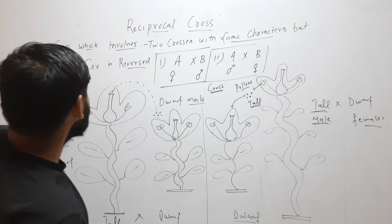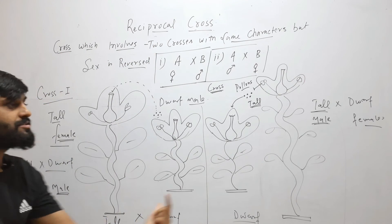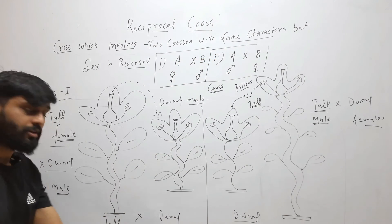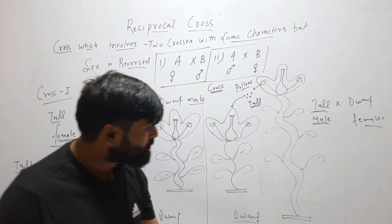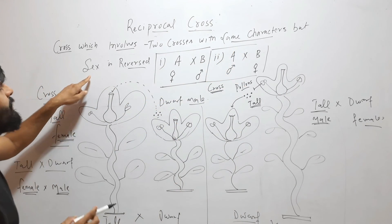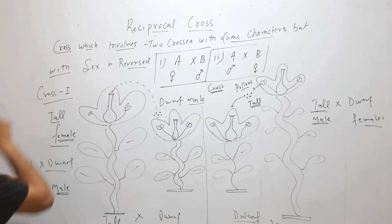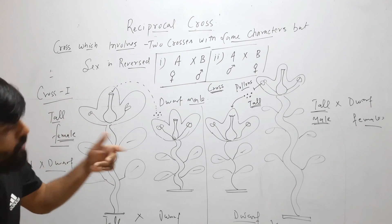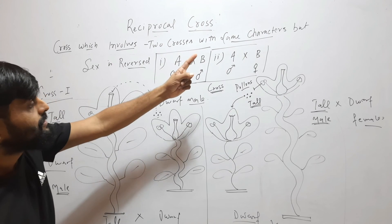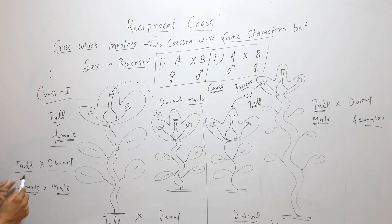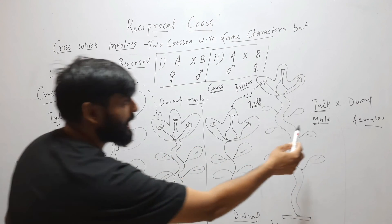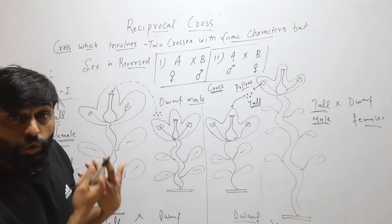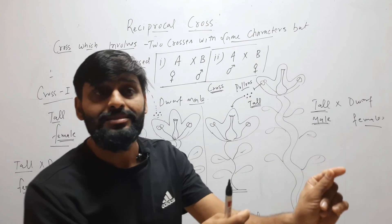So here you can see the definition again: it involves two crosses — cross number one and cross number two — with the same characters, that is tall and dwarf. But with reversed sexes. Here I am reversing the sexes: in cross one, the tall plant is female and the dwarf is male; in cross two, the tall is male and the dwarf is female. So this is Reciprocal Cross — a cross which involves two crosses with the same characters but sexes reversed.